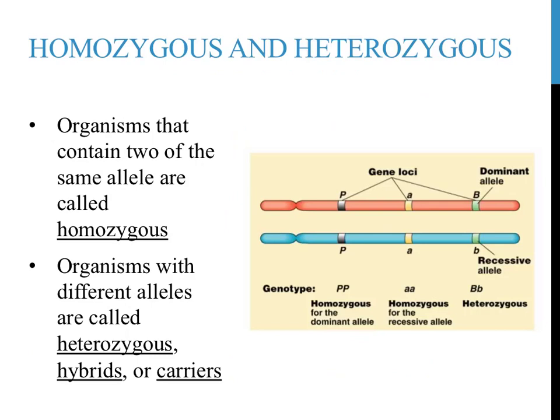The image on this slide shows a pair of homologous, or similarly structured, chromosomes. Since they are homologous, they contain the same genes. This illustration shows three genes using the letters P, A, and B. This individual is homozygous for traits P and A, as they are both in the same form — either both uppercase or both lowercase. This individual would be heterozygous for trait B, as there is one upper and one lowercase allele.